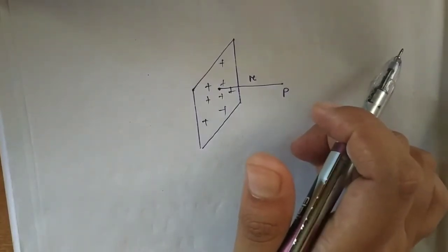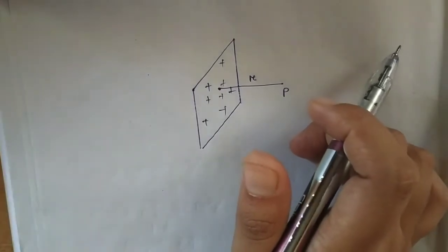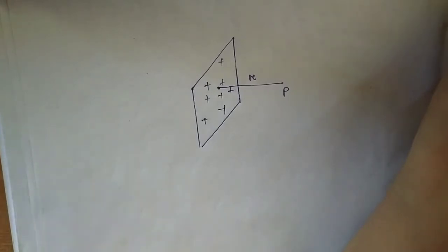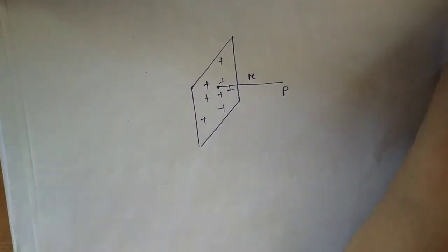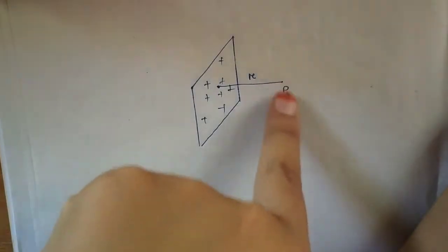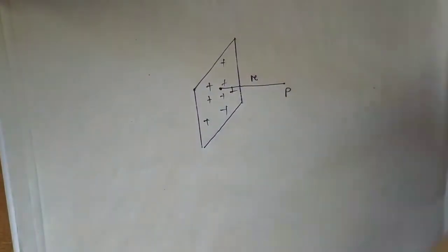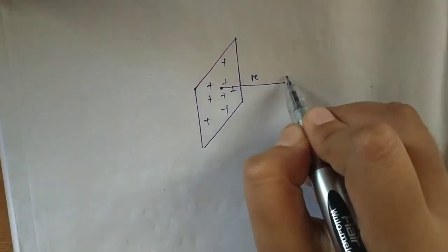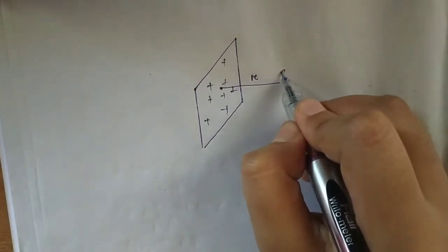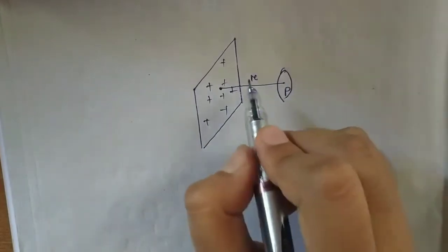Let me consider the surface charge density. I apply the Gaussian surface to the plane sheet with surface charge density. I will calculate the electric field. Here we have a point P at which we want to calculate the electric field, and we draw the Gaussian surface — which is a cylindrical surface.